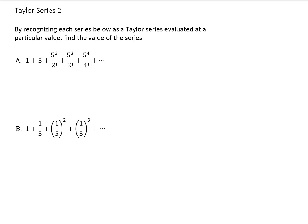What we're going to do with this problem is look at each of these two infinite series and recognize each one as a common Taylor series. Then using that common Taylor series, we're going to determine what this series adds up to. So to do this, we need a list or table of common Taylor series to look at.